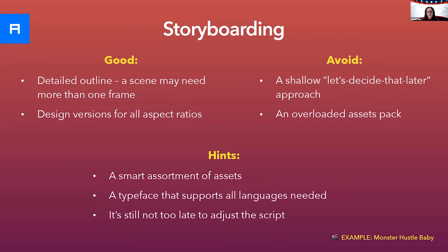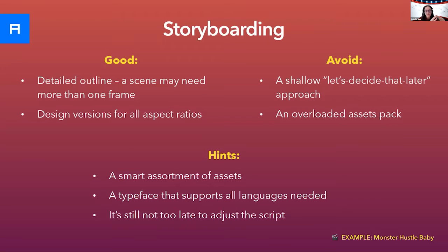When developing a storyboard, remember that for some scenes you might need to design a few stages. For scenes where gameplay captures are supposed to be shown, consider recording the gameplay at this stage, then review the captures and make sure they convey the idea of the scene fully. If a capture doesn't work as well as you thought, there are at least three options. First, you can go back to the script and revise it. A better option — possibly the best — is to allocate resources for building the scene in the game engine and recording from there rather than from the game build. A third option is to show the feature using animated graphics, either new art designed specifically for the video or existing game assets.